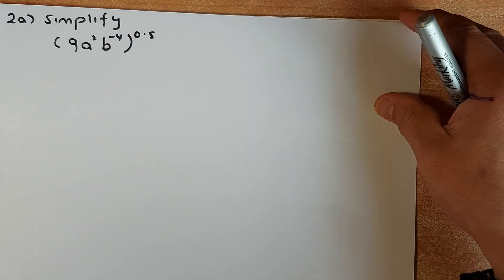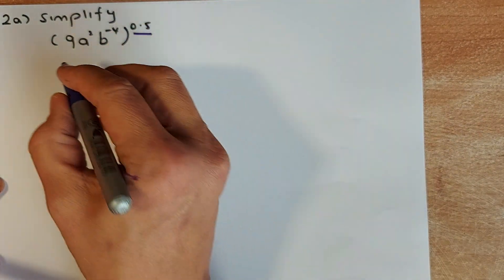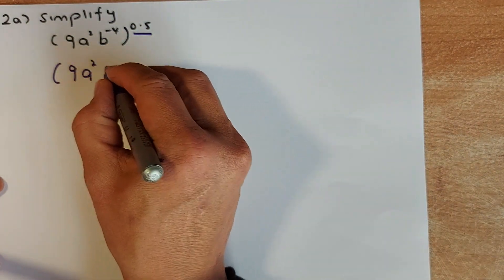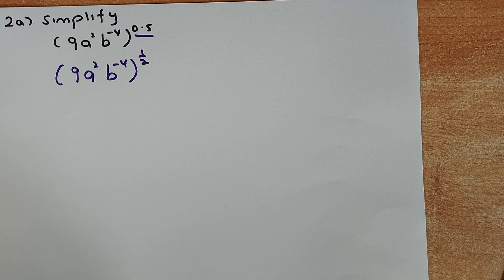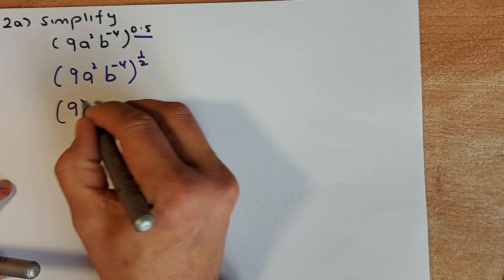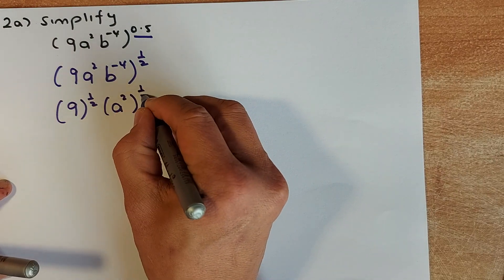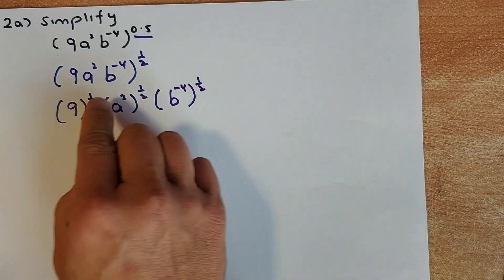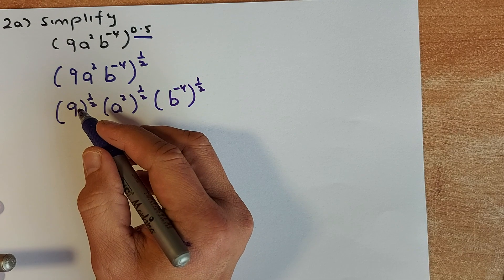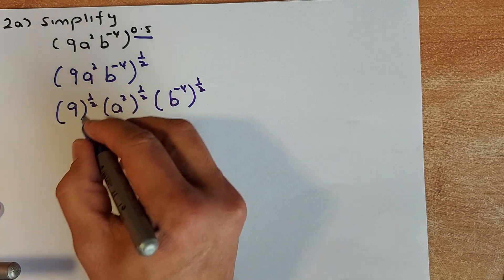Now we're going to look at some indices questions. The first one asks you to simplify an expression. What I would do first is change the 0.5 into a fraction, so it becomes 9a squared b to the power of −4, all to the power of one half. Then I break them down into three separate parts: 9 to the half, a squared to the half, and b to the −4 to the half. If you know the indices rule, 9 to the half is the square root of 9, which equals 3.